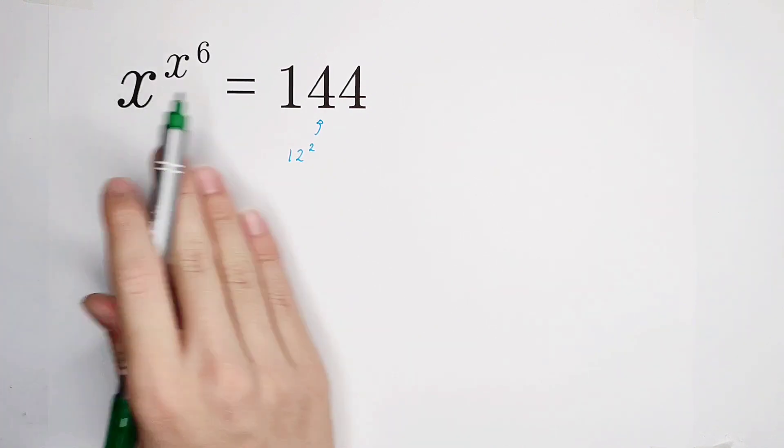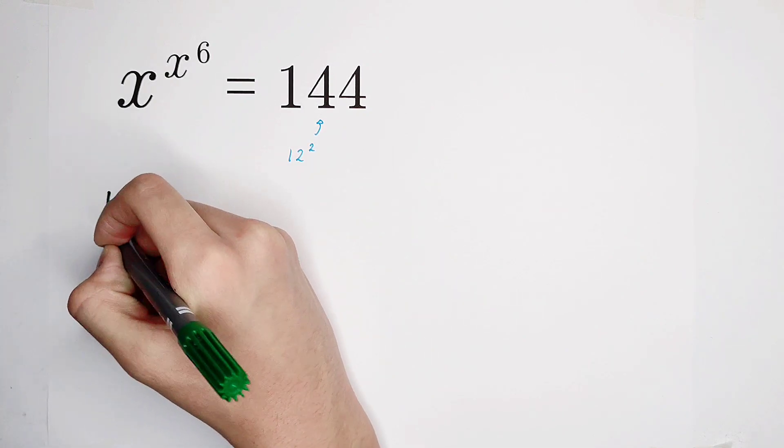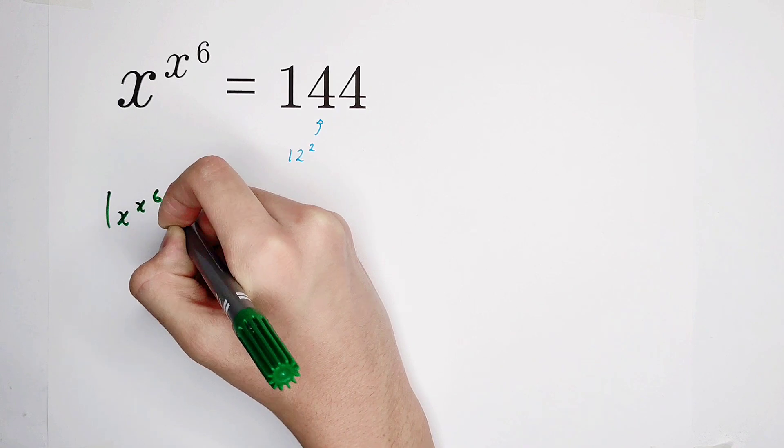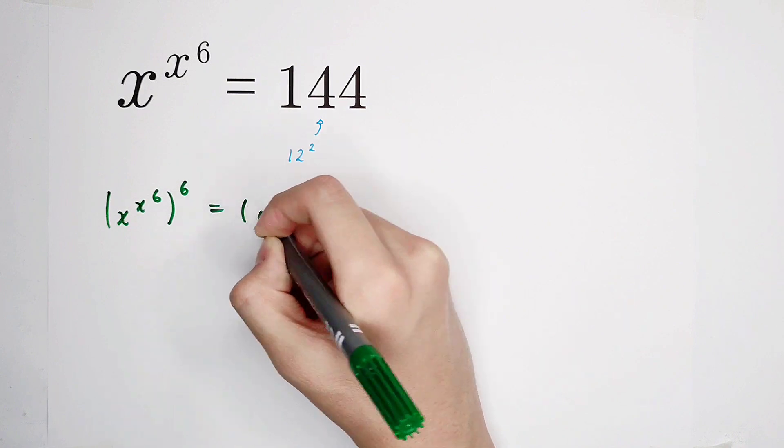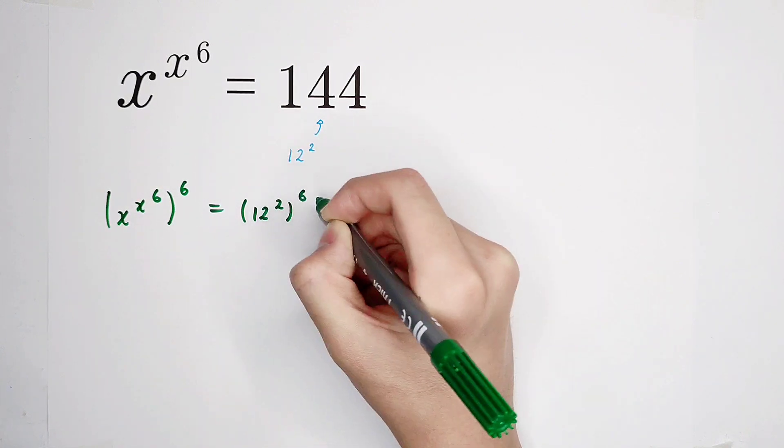We can raise both sides to the power of 6. x to the power of x to the power of 6, all to the power of 6, is equal to 12 squared to the power of 6.